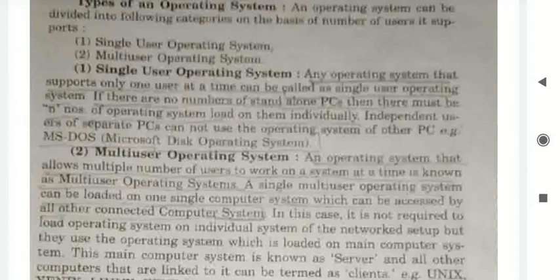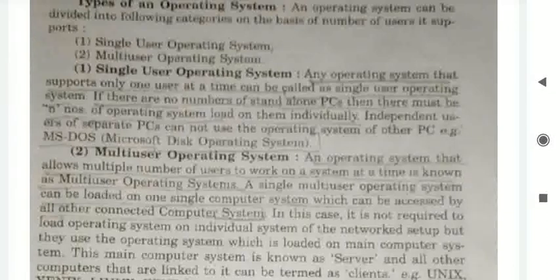If there are a number of standalone PCs, then each must have an operating system loaded on it individually. An independent user of a separate PC cannot use the operating system of another PC. Example: MS-DOS.